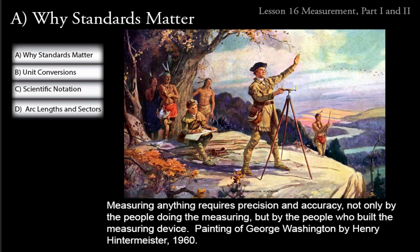Lesson 16 is our first of two lessons on measurement in our introductory 25 lessons, so we'll be introducing some new rules and definitions. Measurement is our sixth of ten major topics in Shorman Algebra II. This 1960 painting by Henry Hintermeister is of his idea of what a young George Washington looked like when he was a land surveyor.